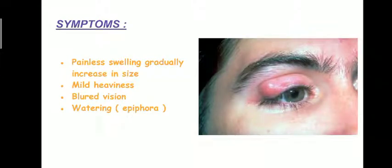Symptoms: characteristically the swelling is painless and gradually increases in size. There is mild heaviness of the eyelids. There can also be blurred vision and watering (epiphora). The blurred vision can be due to the chalazion compressing the cornea, leading to astigmatism.